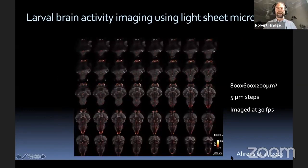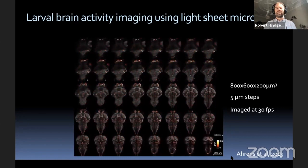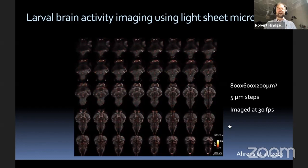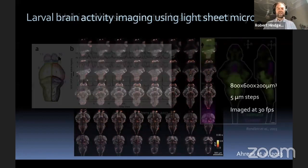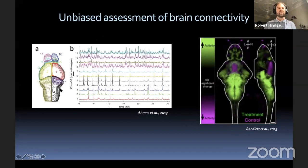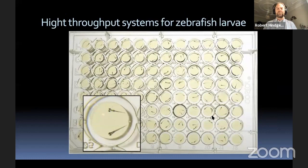Going further, this is an image from a colleague Misha Ahrens, who has done functional imaging of the entire brain — the entire brain volume in five-micron steps imaged at 30 frames per second using a light sheet microscope. You can use zebrafish to look at the entire population of neurons during a particular task or during spontaneous brain activity patterns. You can then use this to make assessments of connectivity — areas that are maybe connected or fire together — and compare activity in a mutant versus wild type to see differences.